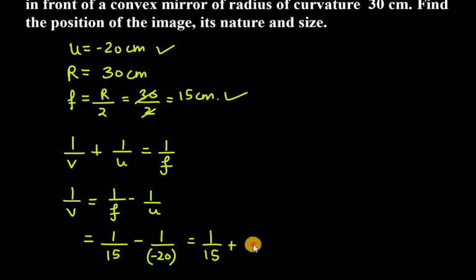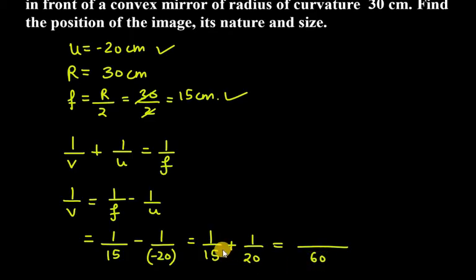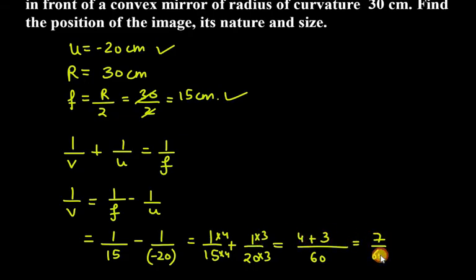So we have 1 over 15 plus 1 over 20. Taking the LCM of 15 and 20, we get 60. The first term is multiplied by 4 and the second by 3, giving 4 plus 3 equals 7 over 60. So 1 over v equals 7 over 60.